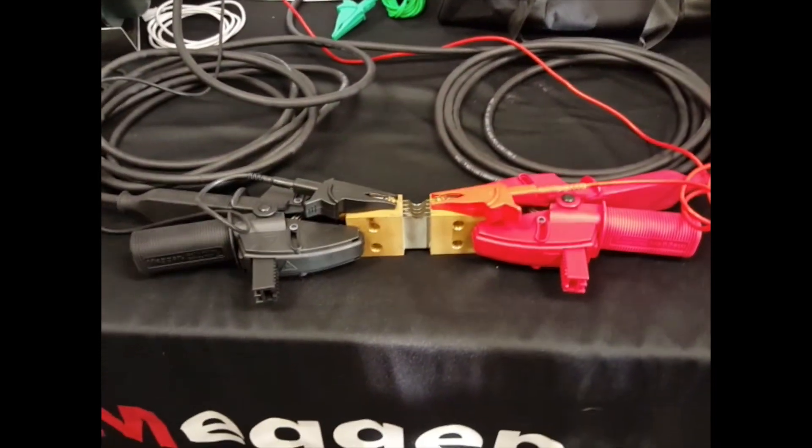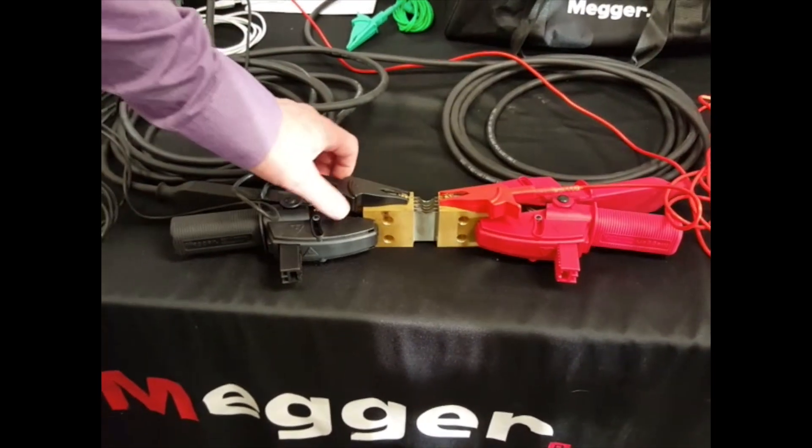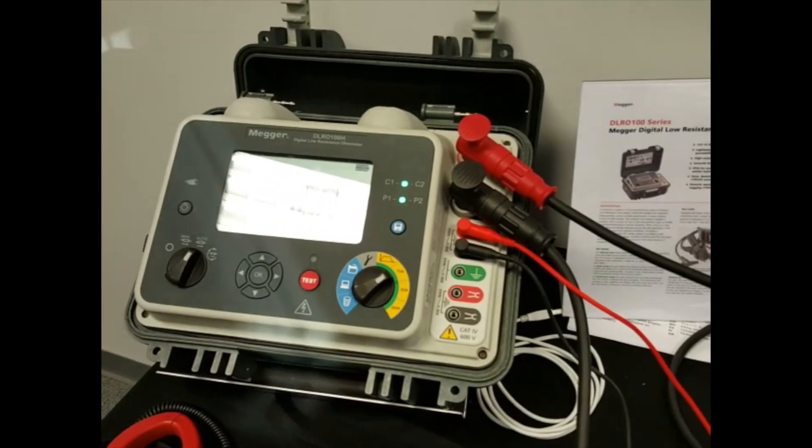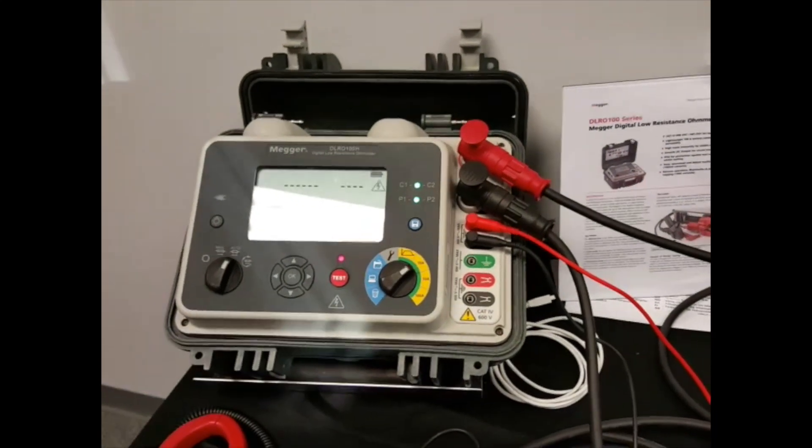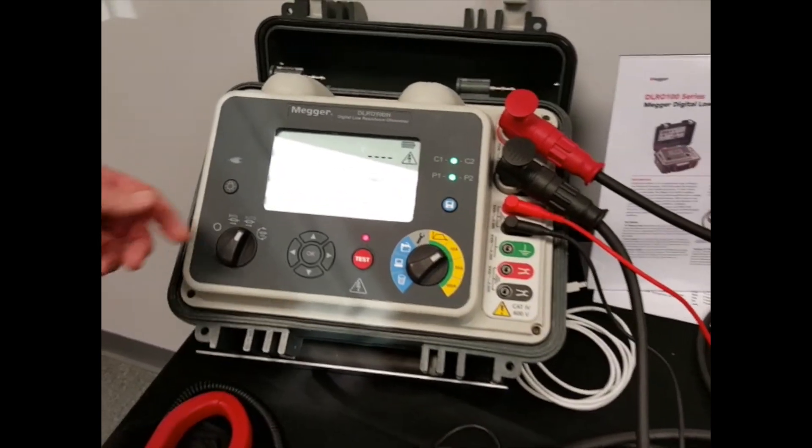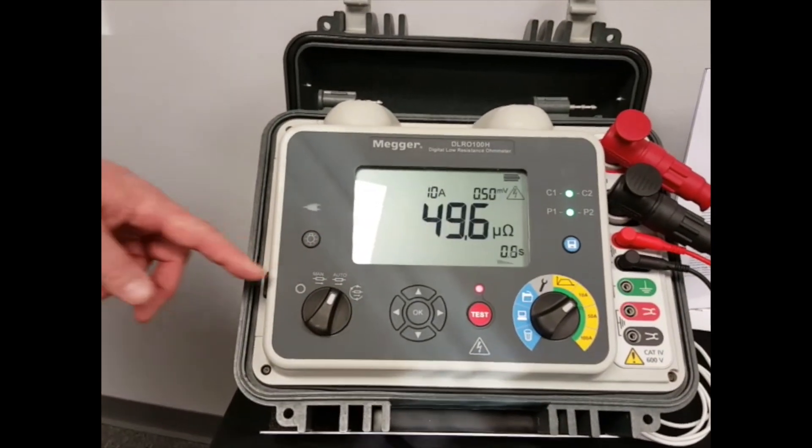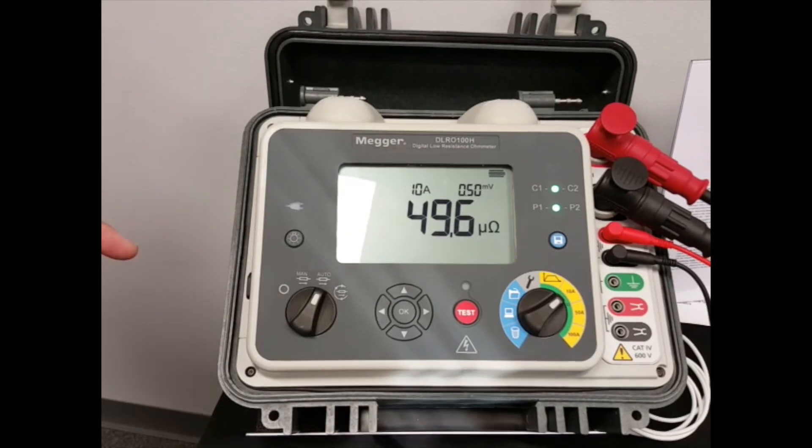If I go here, I have a test shunt here and you can see if I disconnect this test and then apply, as soon as I make a connection the unit automatically starts a measurement. Because I'm using a preset and because it's on these test modes, it will do a standard five second test.